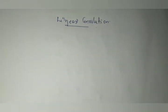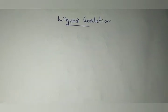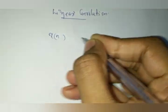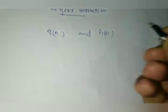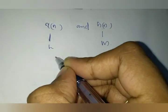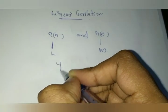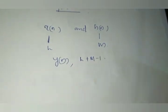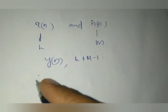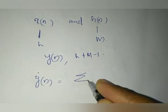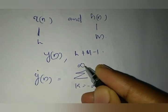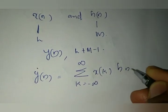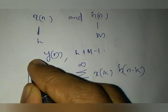Today's topic for discussion is linear convolution. We are going to linearly convolve two sequences x of n and h of n. Let the length of x of n be L and the length of h of n be M. Then the output, or convoluted sequence y of n, will have a length of L plus M minus 1. The equation for linear convolution is given as y of n equals sigma k from minus infinity to infinity of x of k into h of n minus k.